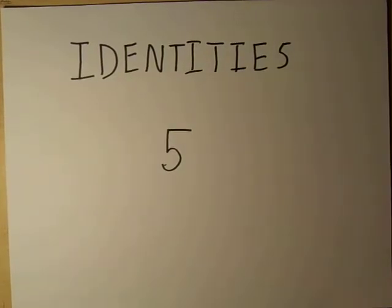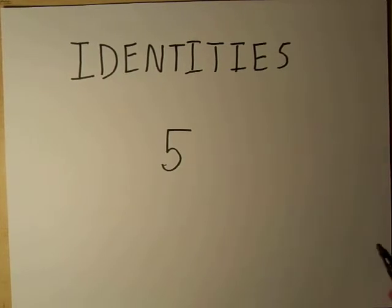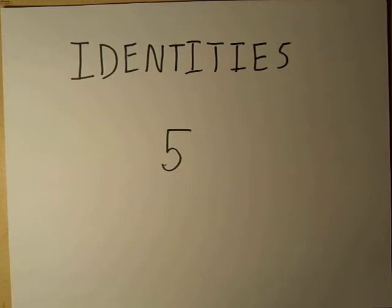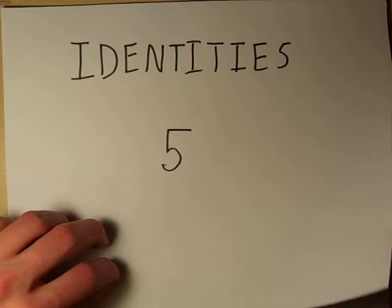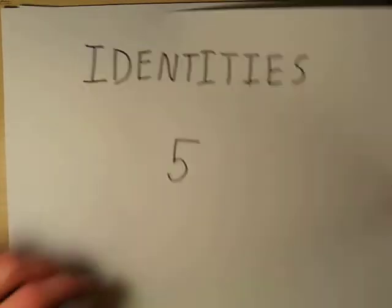Here we're going to have a look at some identities that require us to substitute other identities into them to make them provable — those mainly being Pythagorean identities.